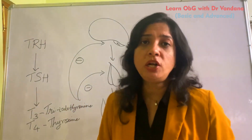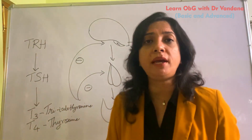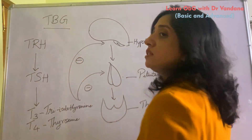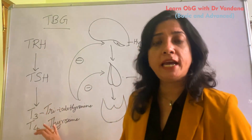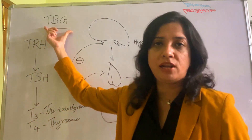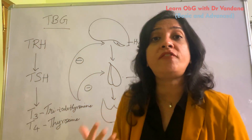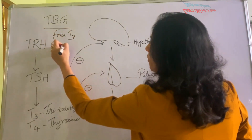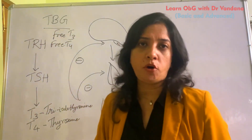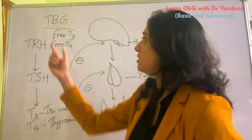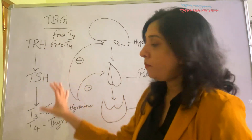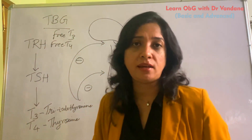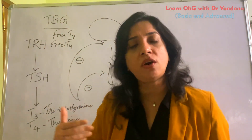It is important to understand that these hormones circulate in two forms. Some are bound to a protein called TBG, or thyroxin binding globulin. The physiologically important hormone available for metabolic purposes is the free T3 and free T4. The other fraction bound to TBG is not directly active. This is about the normal physiology of the thyroid hormone.